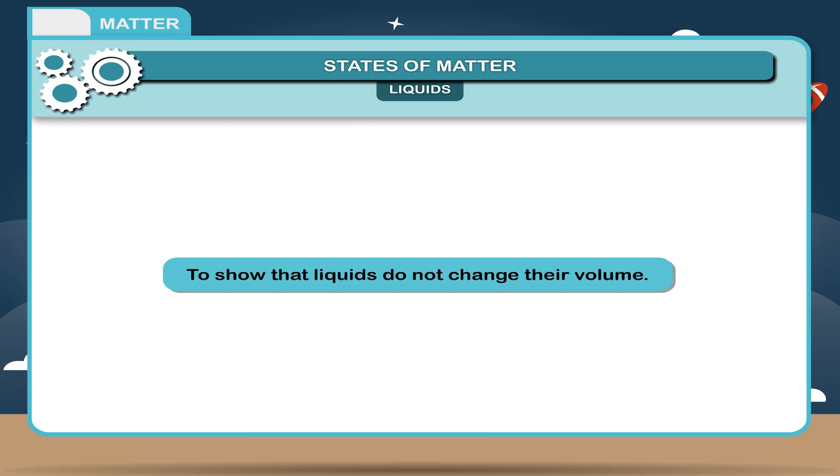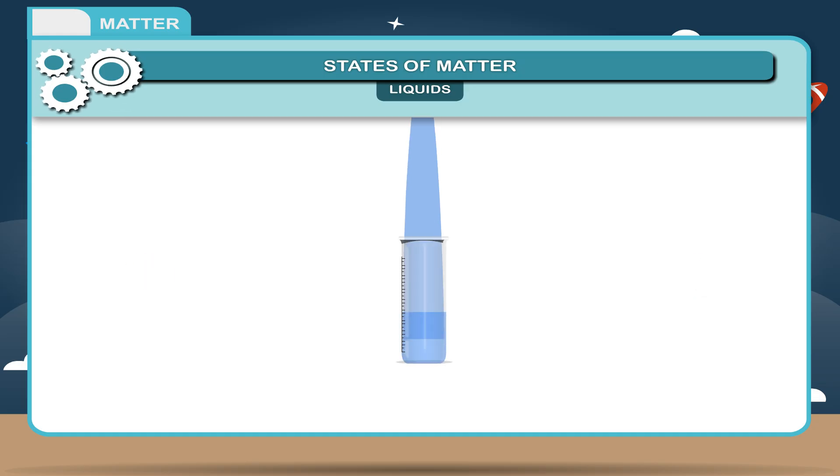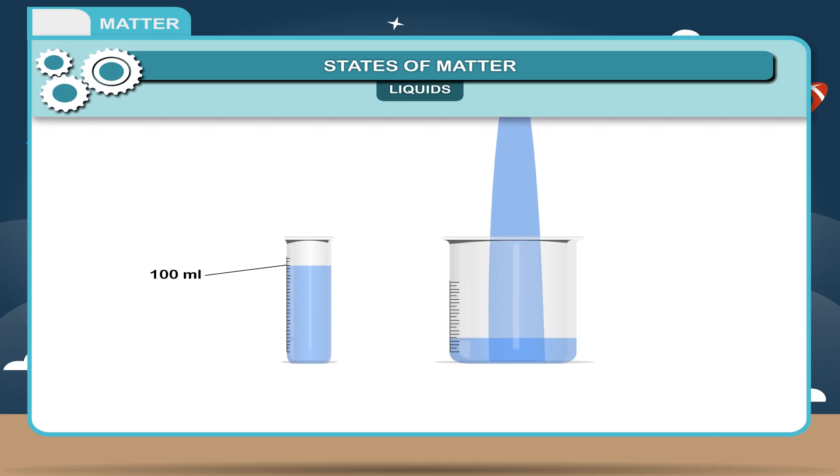Activity: To show that liquids do not change their volume. Fill 100 ml of water into graduated measuring cylinders. We find the water level in every graduated measuring cylinder shows a mark of 100 ml.